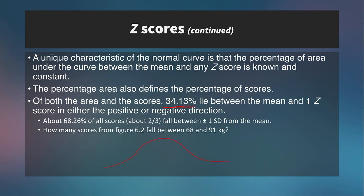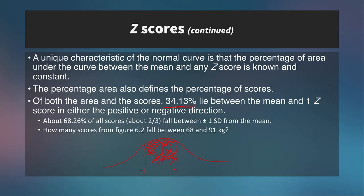So if we have a normal curve with z-scores of positive 1 and negative 1, about 34% of the scores lie under the curve on each side — meaning 68% of scores fall between negative 1 and positive 1 standard deviations. In our data, 68 was minus 1 standard deviation and 91 was plus 1, so 68% of all scores — about two thirds — fall between those two numbers.